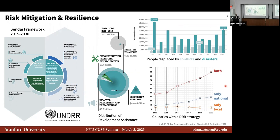Disasters also have long-term effects — five years, ten years. We need to think back to which communities that experienced disasters a decade ago still receive our support. The good news is that through the UN's Disaster Risk Reduction Office, the number of countries with both national and local disaster risk reduction strategies increased sharply in the last five years. Now more than 90 countries are actively thinking about disasters and trying to do something about it.